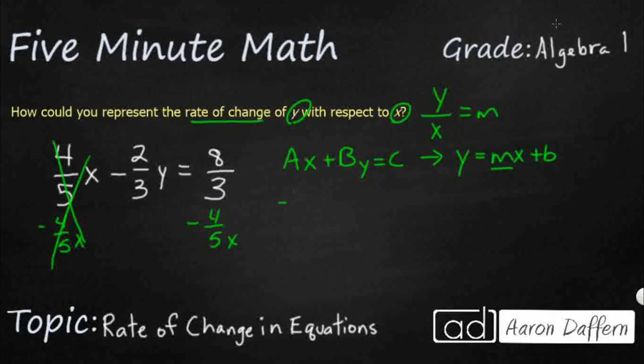That's going to get me, and I'll write it right over here, minus 2 thirds y equals minus 4 fifths x. And then I've got my y-intercept of 8 thirds.